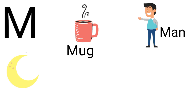Moon. M is for moon. M, double O, N. Moon.